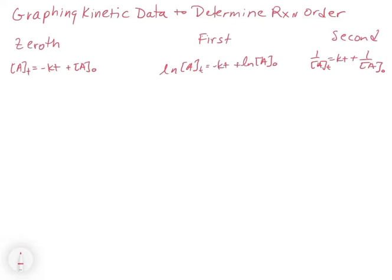For zeroth order, this is the most straightforward one. We have the concentration of A at time t equal to minus kt plus A₀. Overlaying y equals mx plus b on this, y is our concentration of A at time t, the slope times x (which is time), plus b which is A₀. So for zeroth order, the integrated rate law itself is a line — plotting concentration of A versus time gives us a straight line.